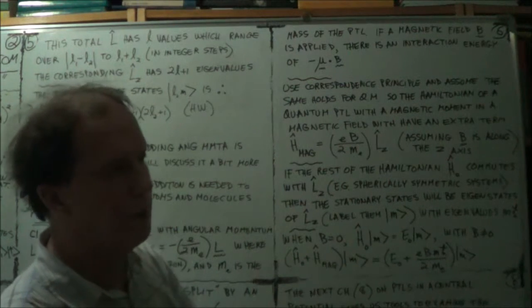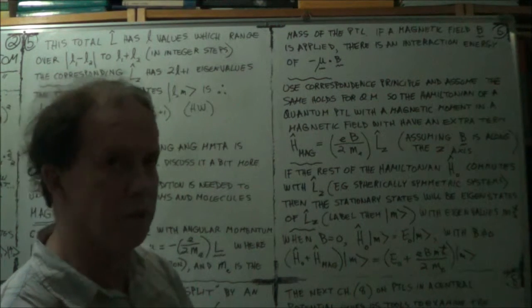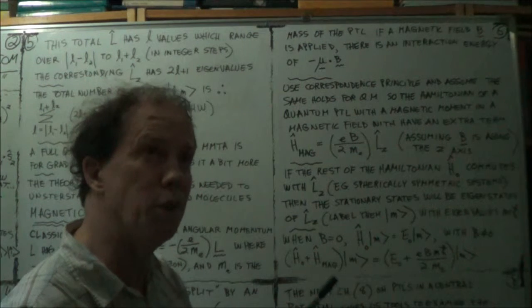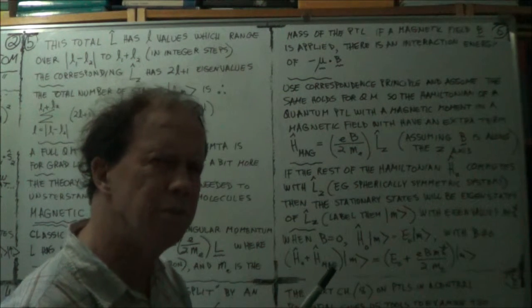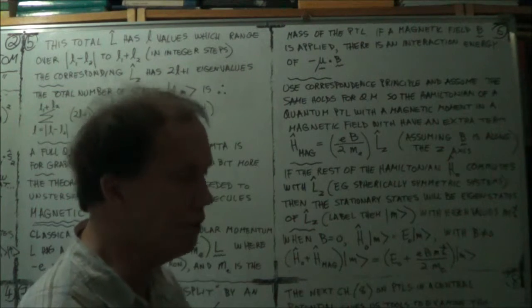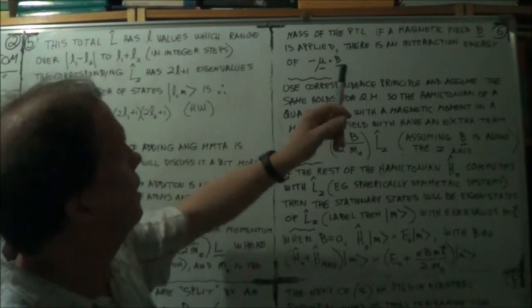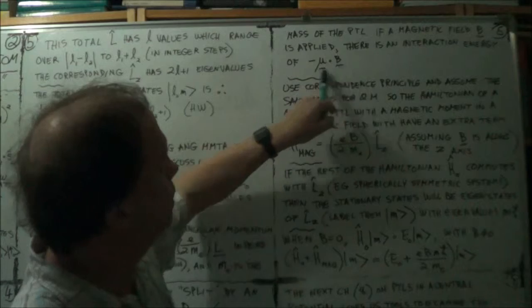So magnetic field lines by convention, I think, go from the north pole to the south pole? Or is it the other way around? It's just a convention. Right? So this is a kind of potential energy term.